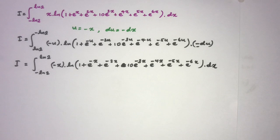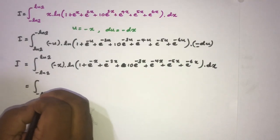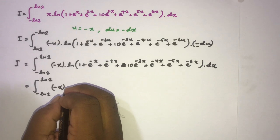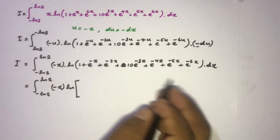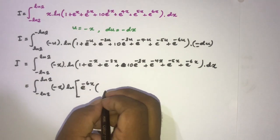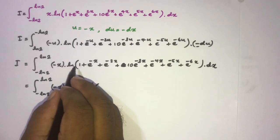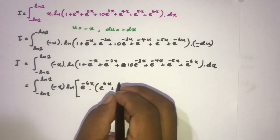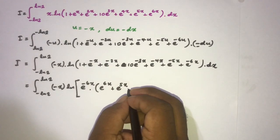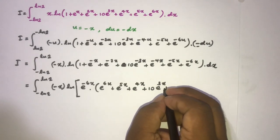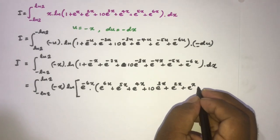Now, from minus natural log of 2 to natural log of 2, we have minus x times the natural log of the expression. We take e^(-6x) as a common factor, rewriting the argument as e^(-6x) times (e^(6x) + e^(5x) + e^(4x) + 10·e^(3x) + e^(2x) + e^x + 1).